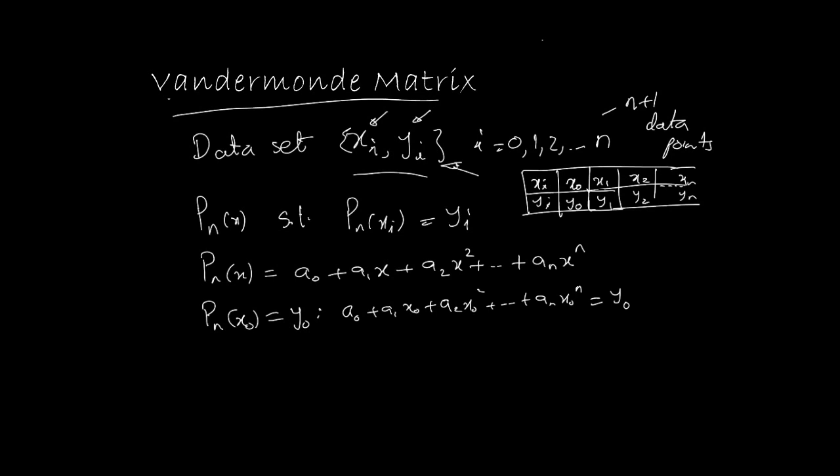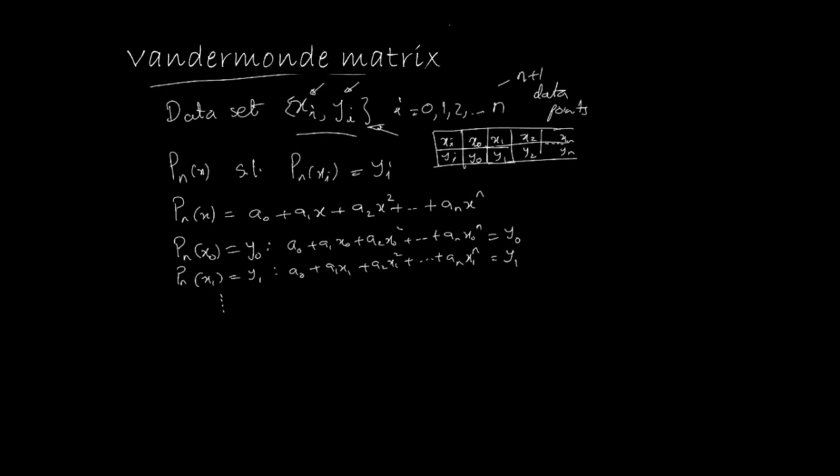If we do the same for the other point, as you can see, at x1, y1, so we get this polynomial here, and it's equal to y1. Now, in the same way, we can continue on x2, x3, up to xn. And what happens at xn is, we have xn here. That means it should be yn, which means we end up with the nth equation.